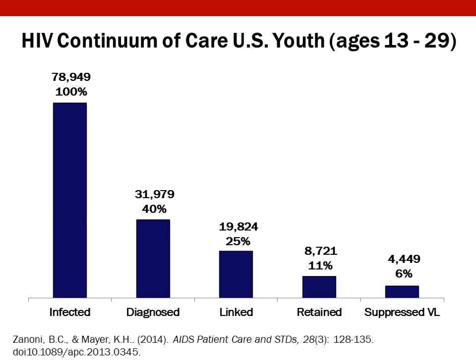The HIV continuum of care can be used in a variety of ways. One of the best ways is to look at specific populations. This slide shows what is happening with young people who are HIV infected in the United States. It is clear from this graph that the drop-offs are much more severe than we saw in the last slide and that youth need special attention in the HIV epidemic.